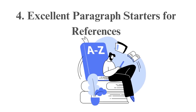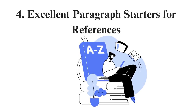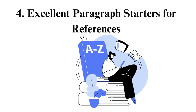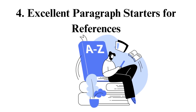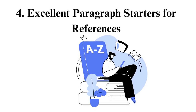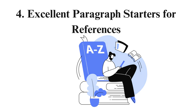4. Excellent paragraph starters for references. You can use the words below when starting a paragraph with a citation: according to, bestowing to, as explained by, based on the results of, as indicated by.